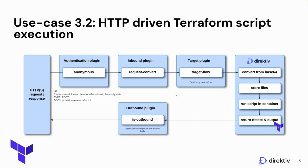We execute this script in three phases: init, plan, and apply. Then we take the tf state that was created and store it back in Directive as an output variable. Based on the query parameters — init, plan, apply, or state — we filter out the output we don't need and pass it back to the API Gateway via the JS outbound plugin.